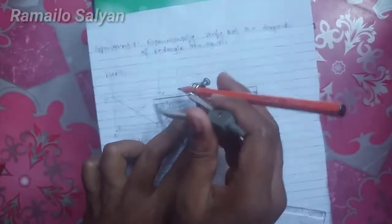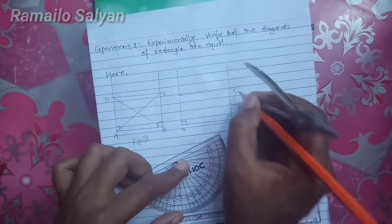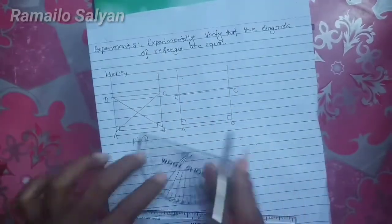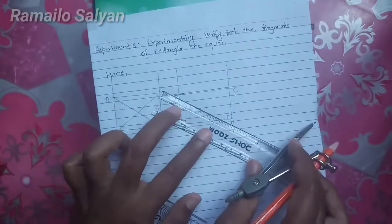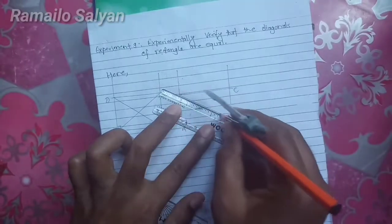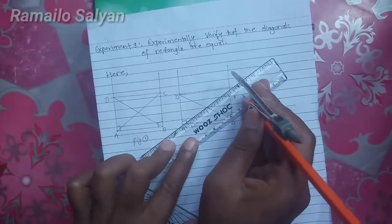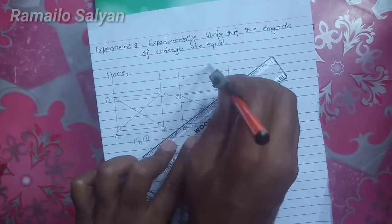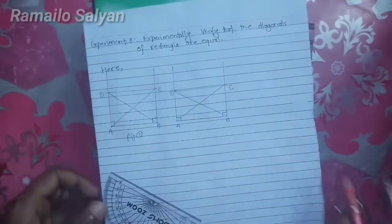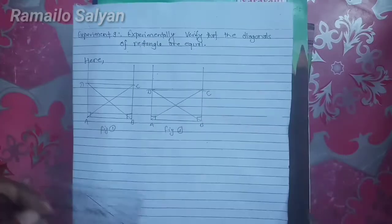Join these two intersecting points. The name of these points is C and D, so ABCD is a rectangle. Join opposite vertices D and B, and A and C. AC and BD are the diagonals of this rectangle. In this way, construct the third figure as well.